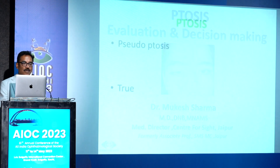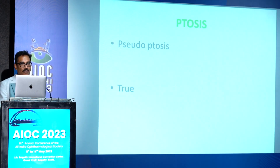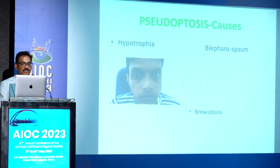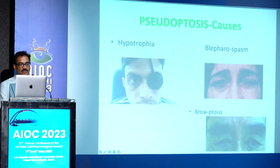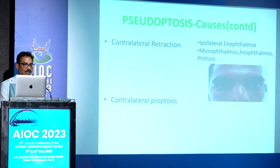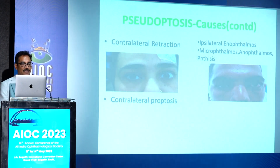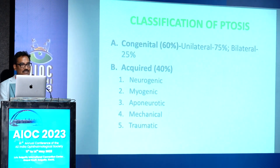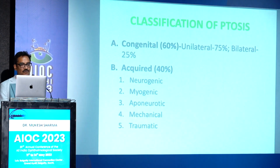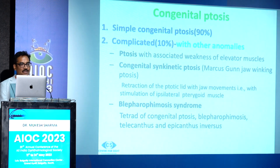When we talk of ptosis, we must know the condition called pseudoptosis. Pseudoptosis is classically present when there is hypotropia — occluding the other eye makes the ptosis disappear. Other causes include blepharospasm or proptosis, which are not true ptosis, contralateral enlarged palpable fissure such as retraction or proptosis, or ipsilateral small eyes such as anophthalmos, microphthalmos, phthisis, and enophthalmos. For true ptosis, most cases — about 60% — are congenital and 40% are acquired. Of congenital ptosis, 90% are simple and 10% are complicated, associated with anomalies like double elevator palsies, synkinetic ptosis, or blepharophimosis syndrome.